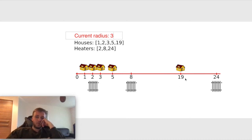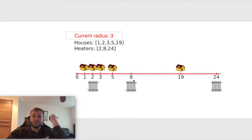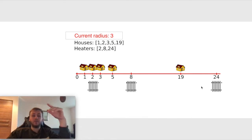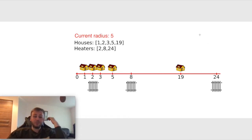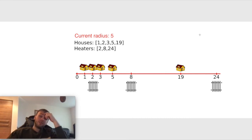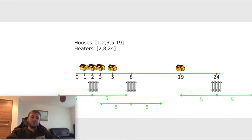For the last house at position 19, the heater on the left has a distance of 11, and the heater on the right is at 24, so 24 minus 19 equals 5. To warm this house we need to update the current radius to at least 5. We have no more houses, so we return our radius which is 5 — that is the minimum radius needed to warm all the houses. Now let's code it.